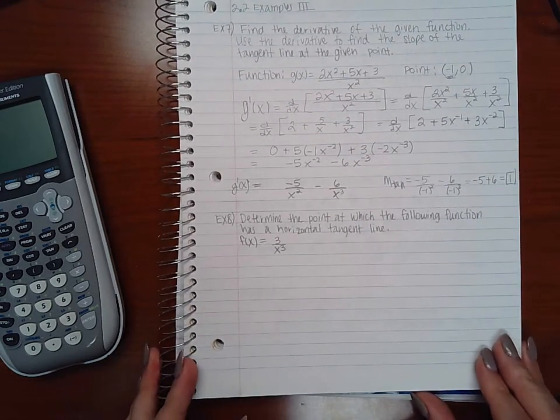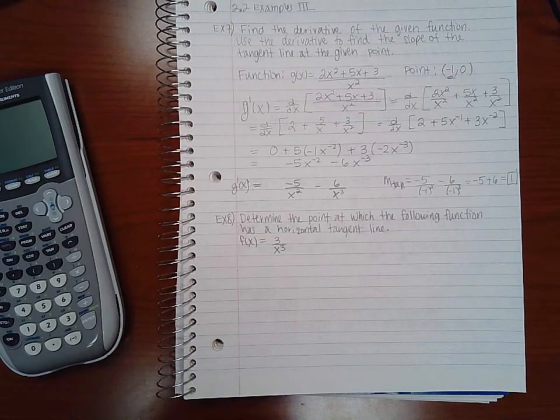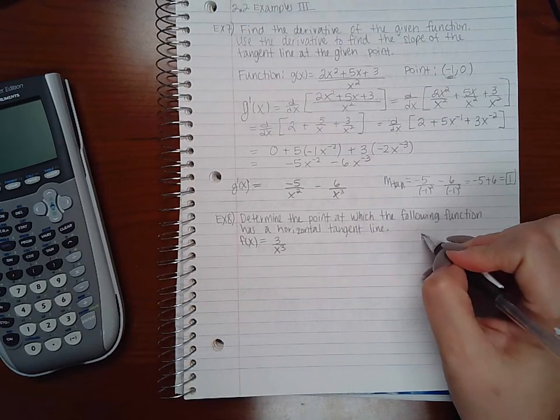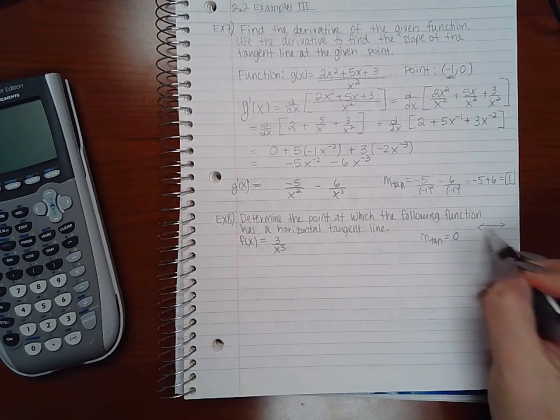For example 8, it says determine the point at which the following has a horizontal tangent line. So you have to think about that. If it has a horizontal tangent line, that means that the slope of the tangent line is 0. That is the slope of a horizontal line.